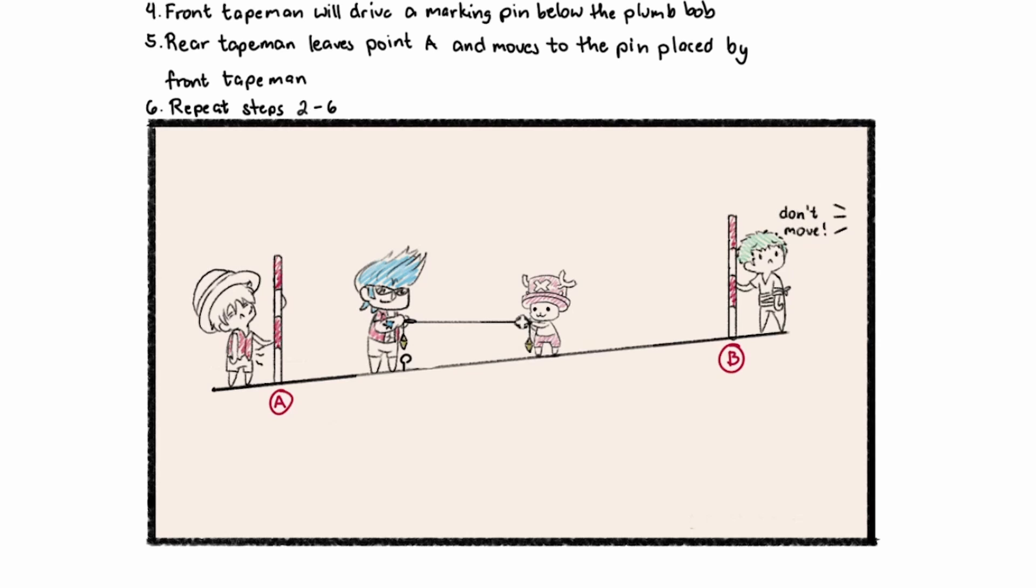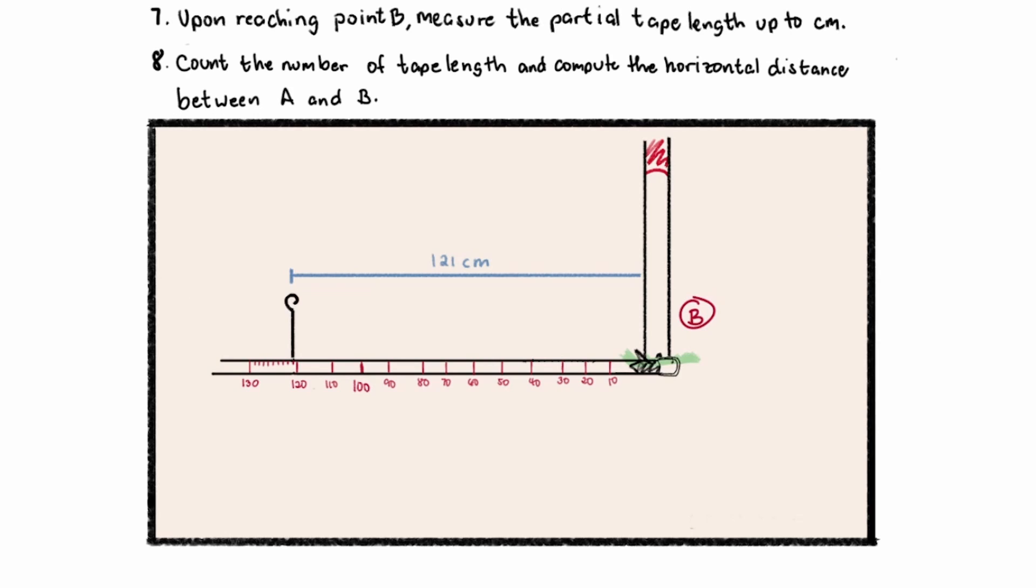Afterwards, you're just going to repeat steps 2 to 6 until you reach point B. And then upon reaching point B, measure the partial tape length up to centimeters. So you're now going to place the zero mark at range pole B and then take your measurement.